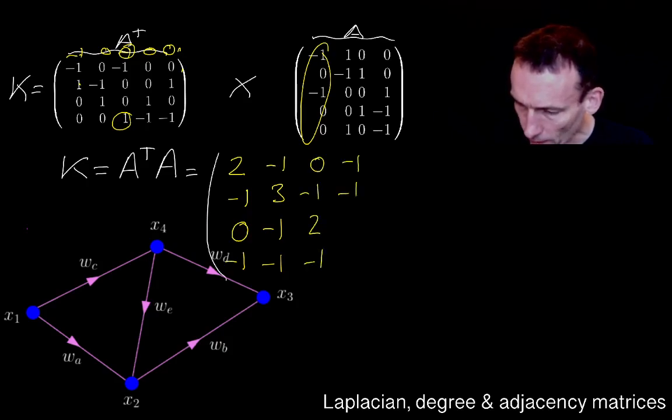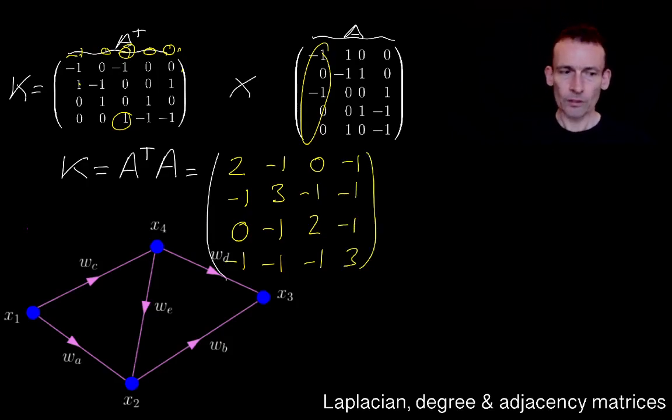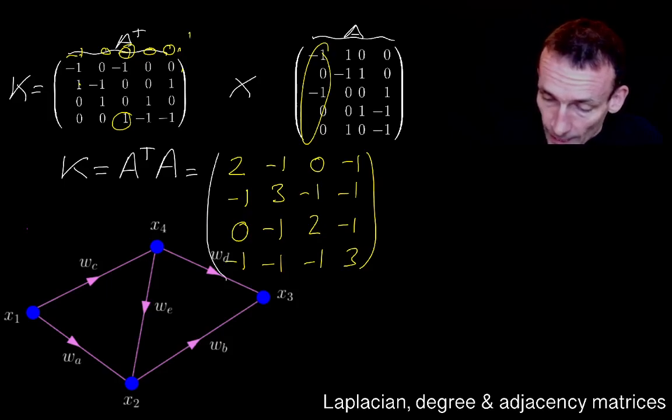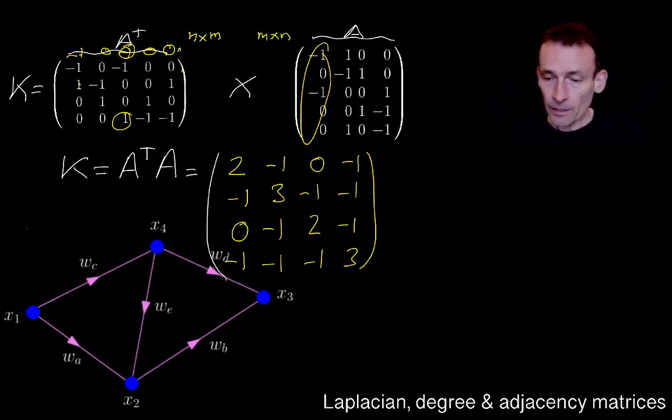This is what you get if you just work out what that matrix product is. Of course, it's the product of two matrices. This one of course is n by m and this one is m by n. So it's not surprising then that I get an n by n result.